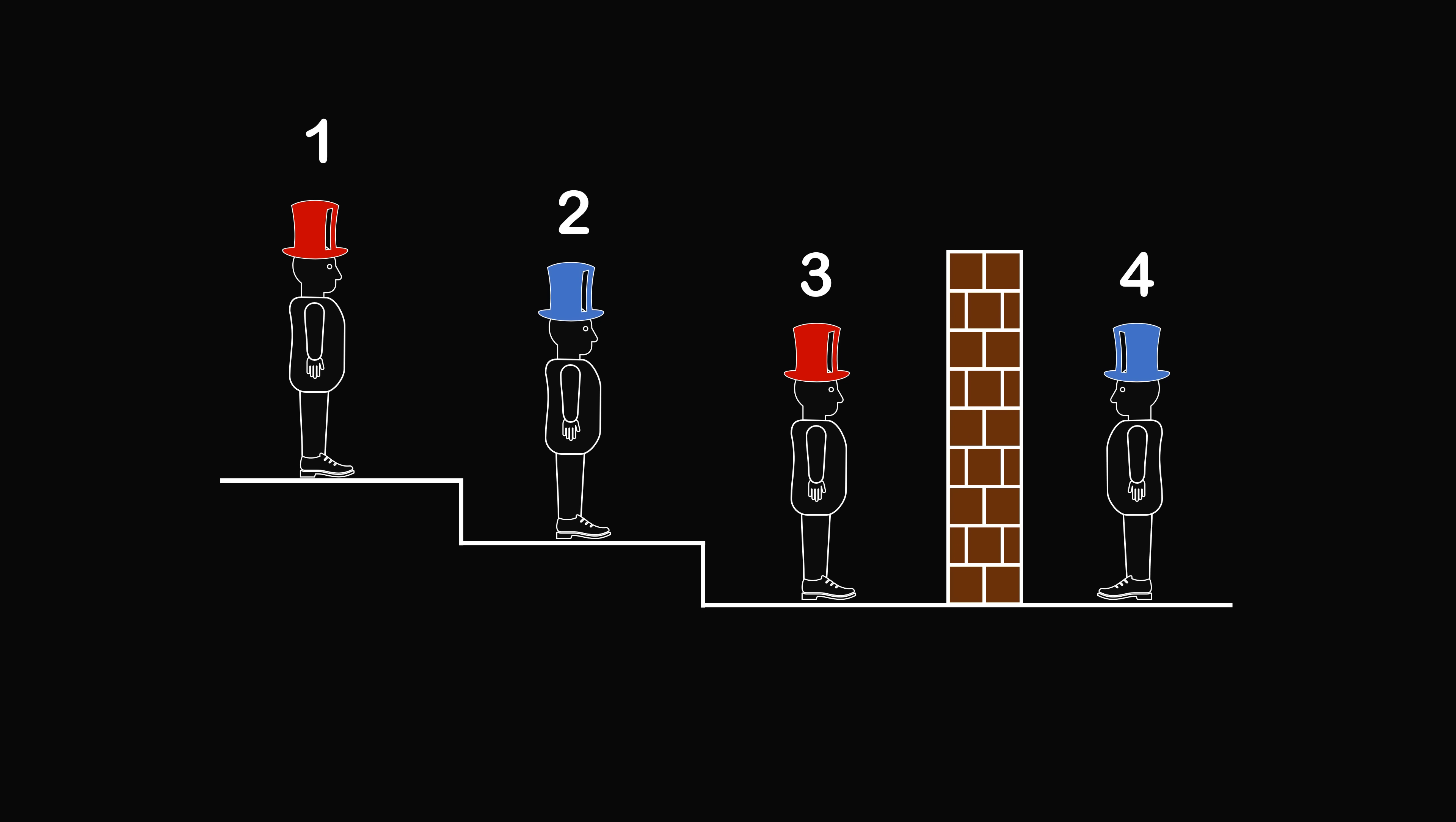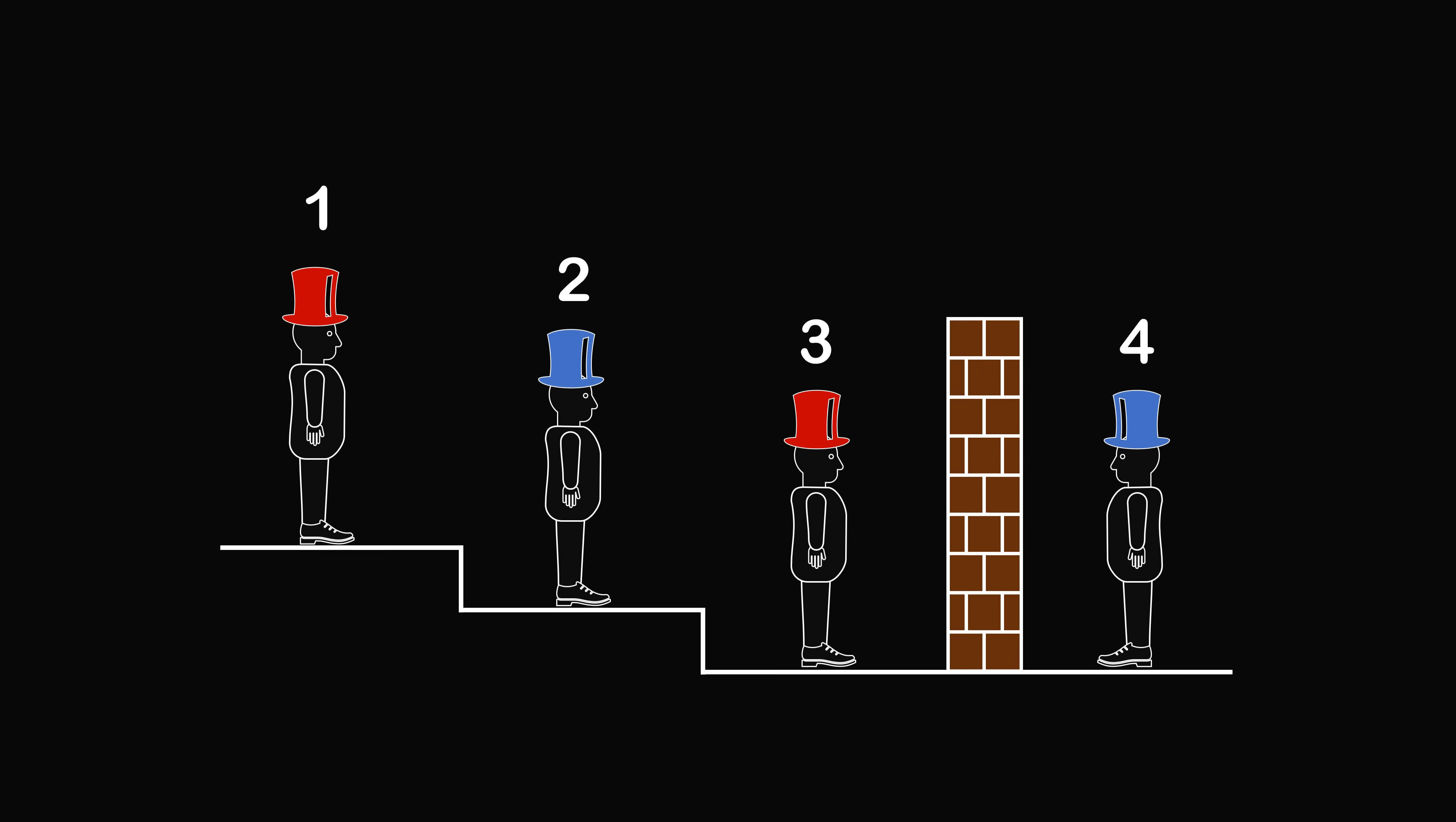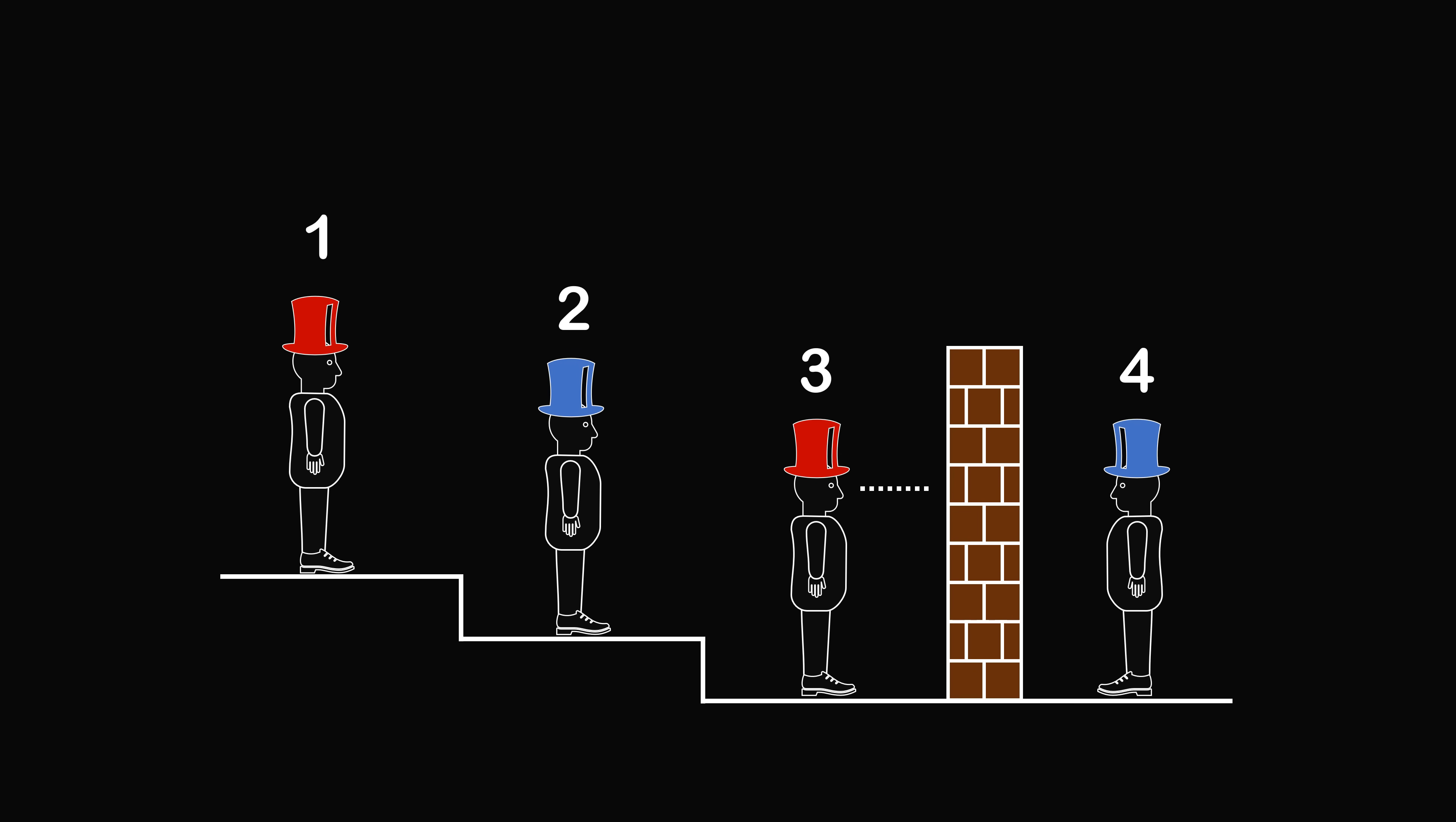So how can we work it out? First, logician three only looks at a brick wall. So there's no information that the third person could have. There's no way this person could shout out with certainty. The same thing is true for logician four. The logician only sees a brick wall and doesn't have any information. So four is not going to shout out any answers.